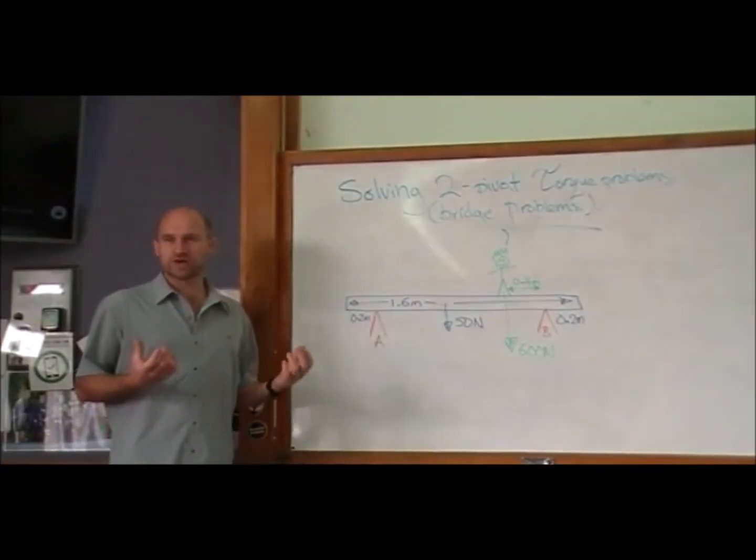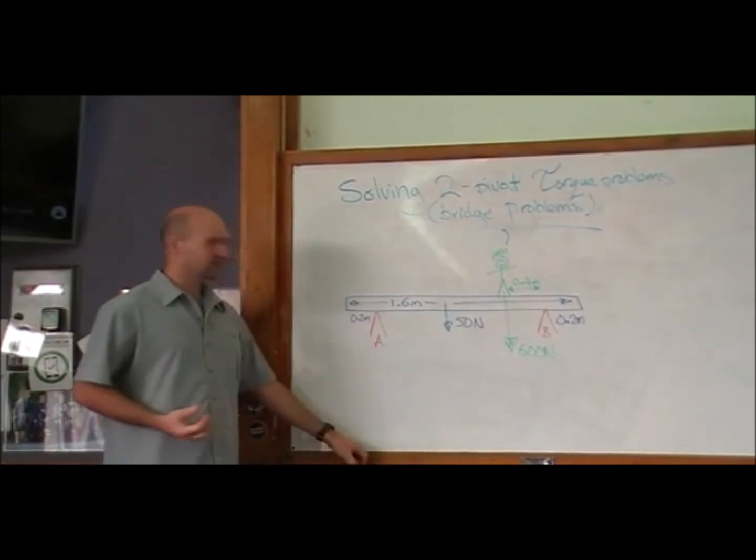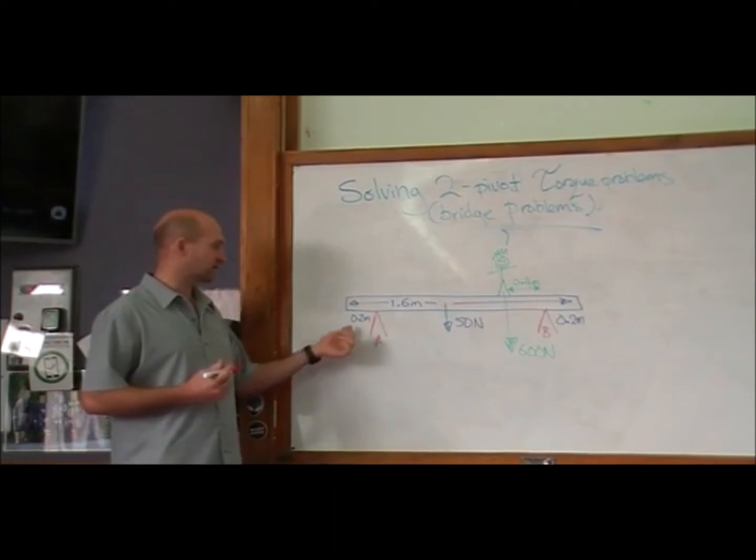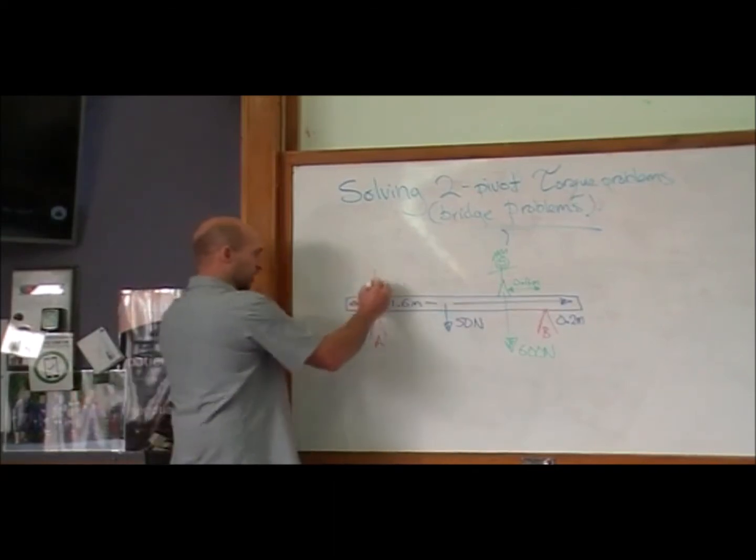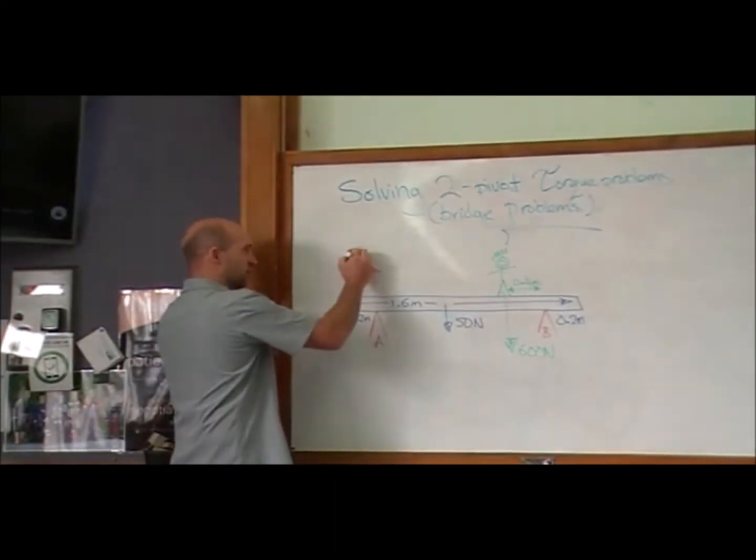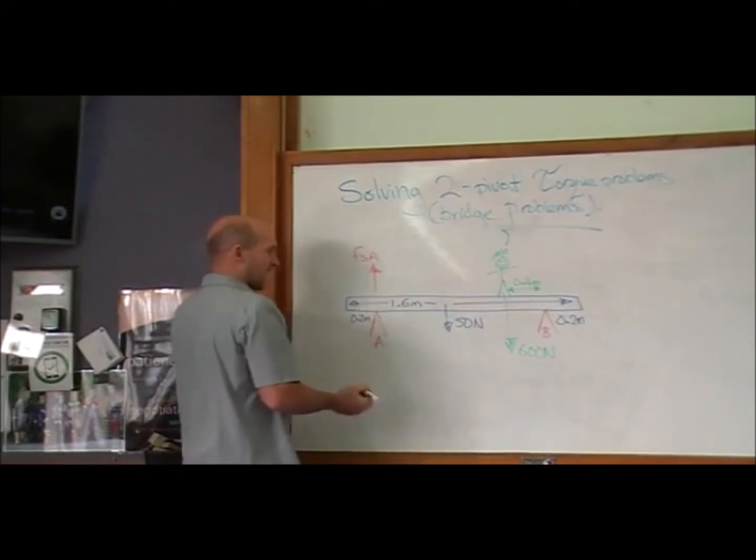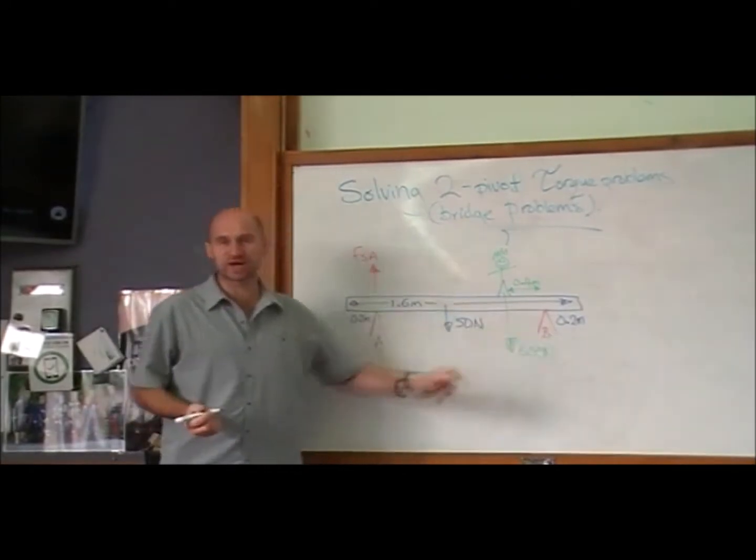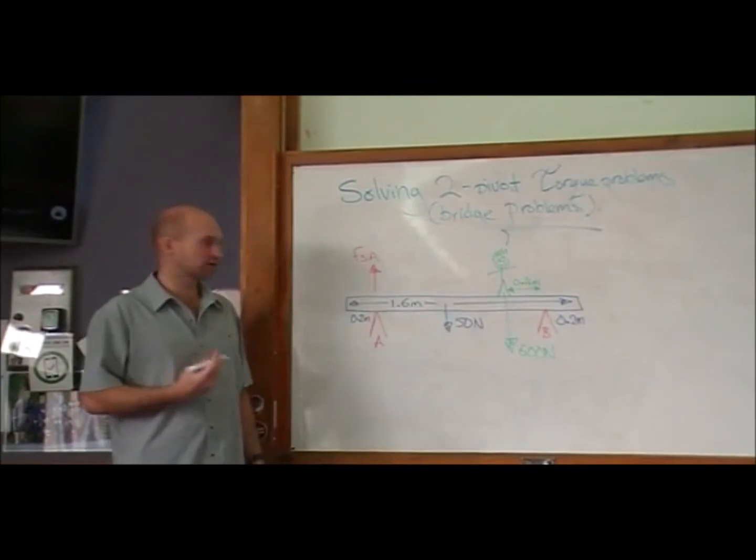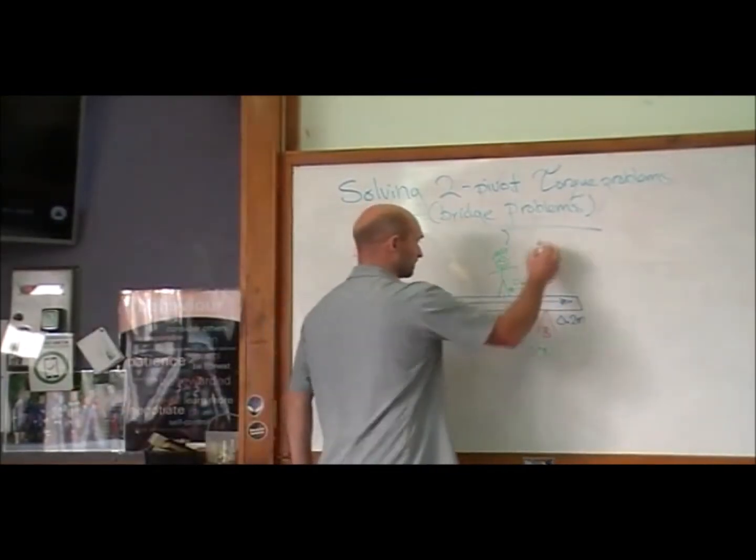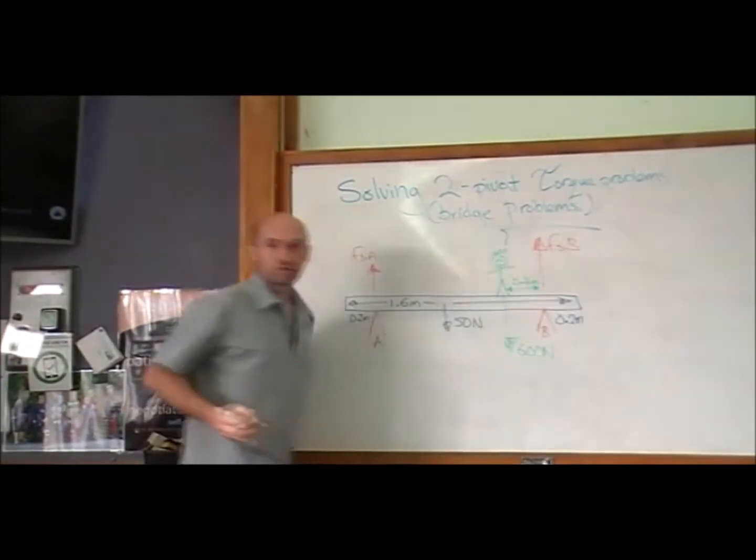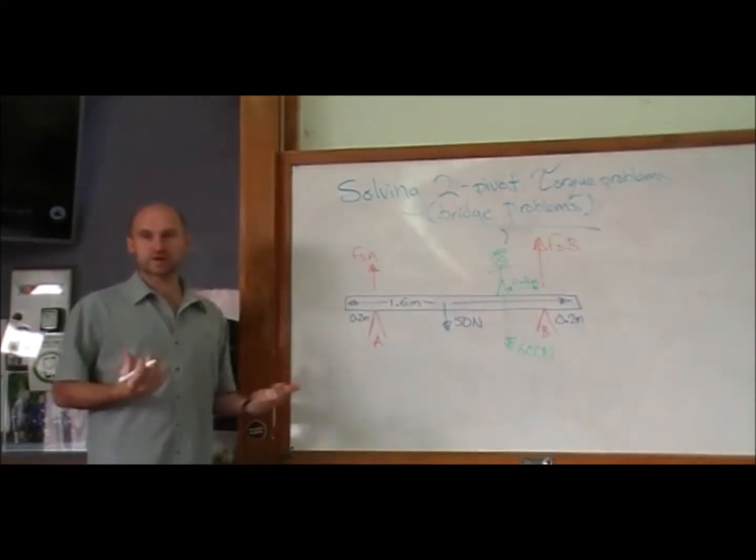And what we want to do is work out the support forces. To hold up this plank, we have to have support forces pushing up from each of these pivot points. So support force A, and probably a little bit bigger because our physicist is closer to it, is going to be support force B. So the way we're going to solve these problems is by using torques.